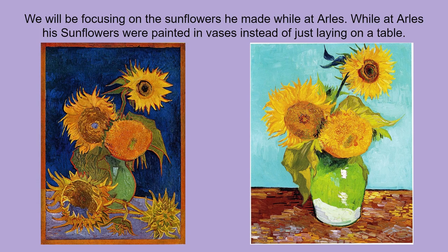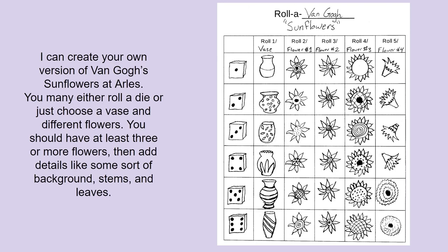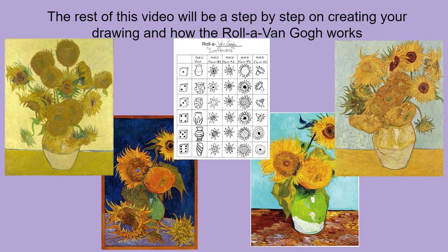We're going to be creating our own version of his sunflowers. We'll start by making a vase, making the flowers, making the stems, doing the details, and adding a line for where the table and wall would be separated. You can either choose your own way of making the vase and flowers, or use the Roll of Van Gogh that I've included — you roll a die, and your first roll picks which vase to draw, and your second roll picks what type of flower to make. I recommend making more than four flowers — fill it up, just like some of his pictures where there are 10 different flowers coming out of one vase.